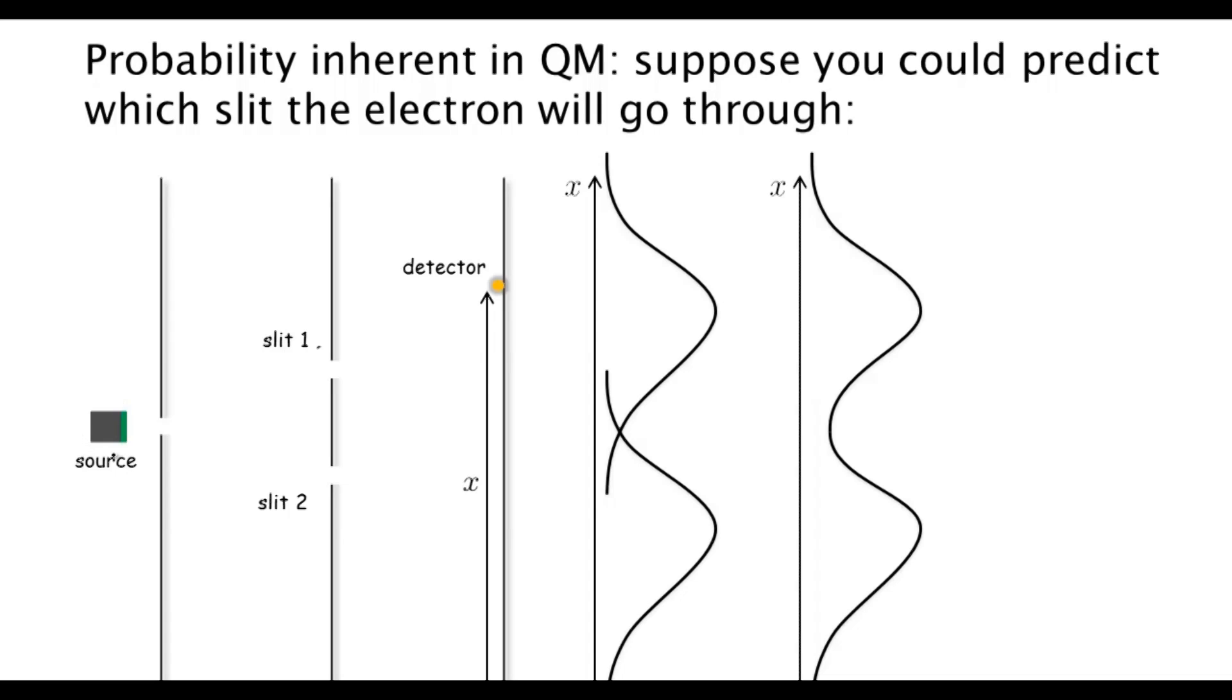...there's no way of predicting which slit the electron went through. So somehow this probability is inherent in quantum mechanics. This fact that when you make a measurement you get a random outcome—this is completely inherent in quantum mechanics. It's not a lack of knowledge, it's inherent.